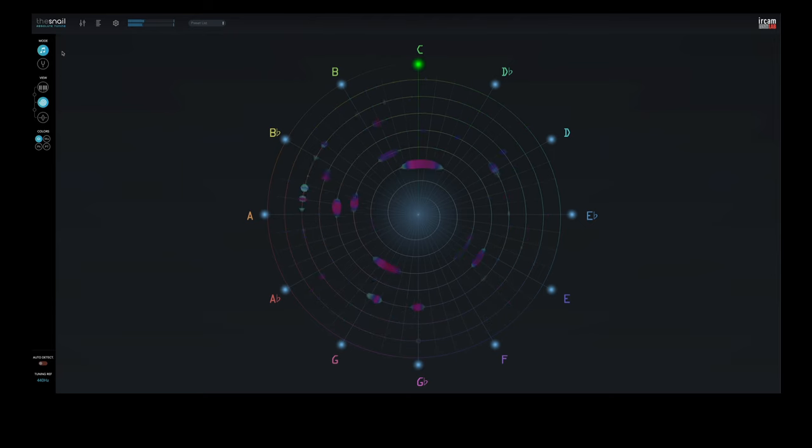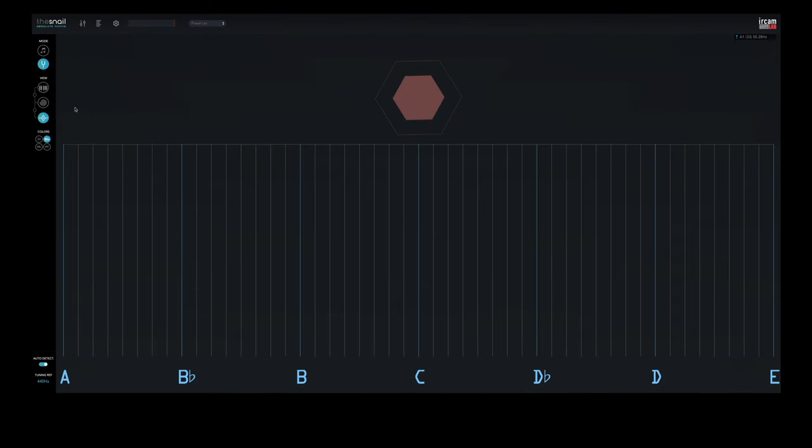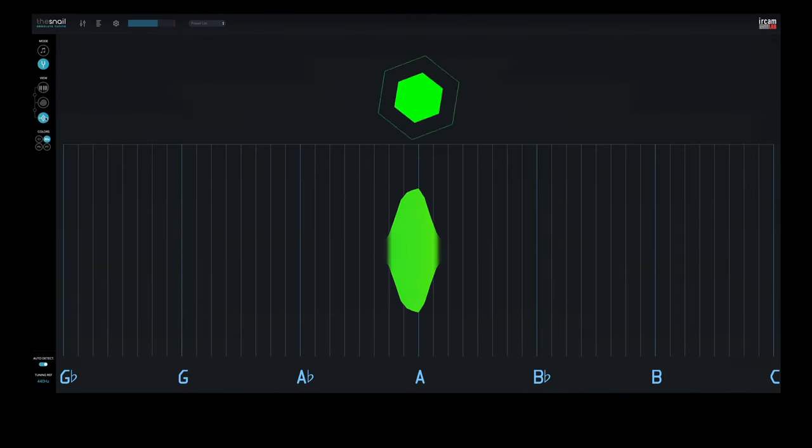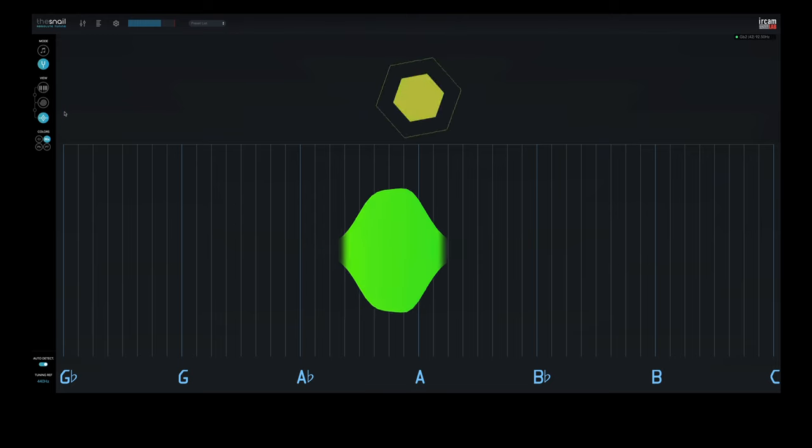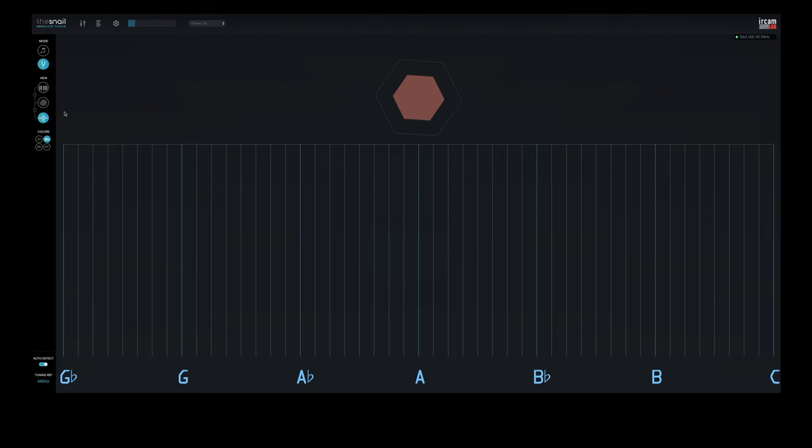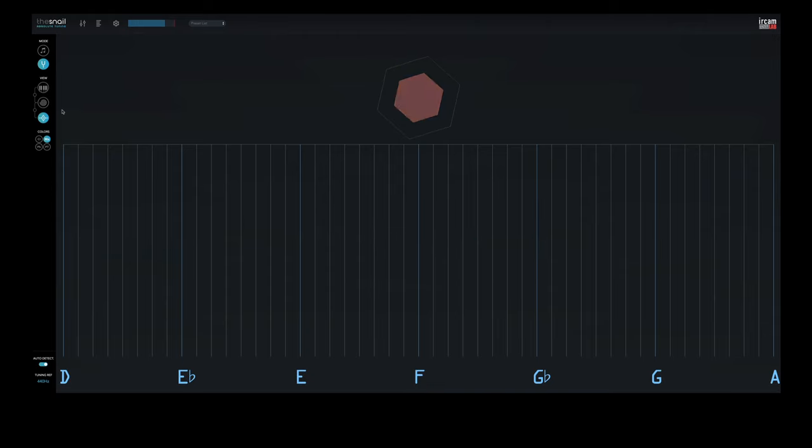In the zoom tuner view, the hexagonal shape rotates and slows down as you zero down to green on the exact reference frequency. That is the closest view to a traditional tuner while being way more precise.